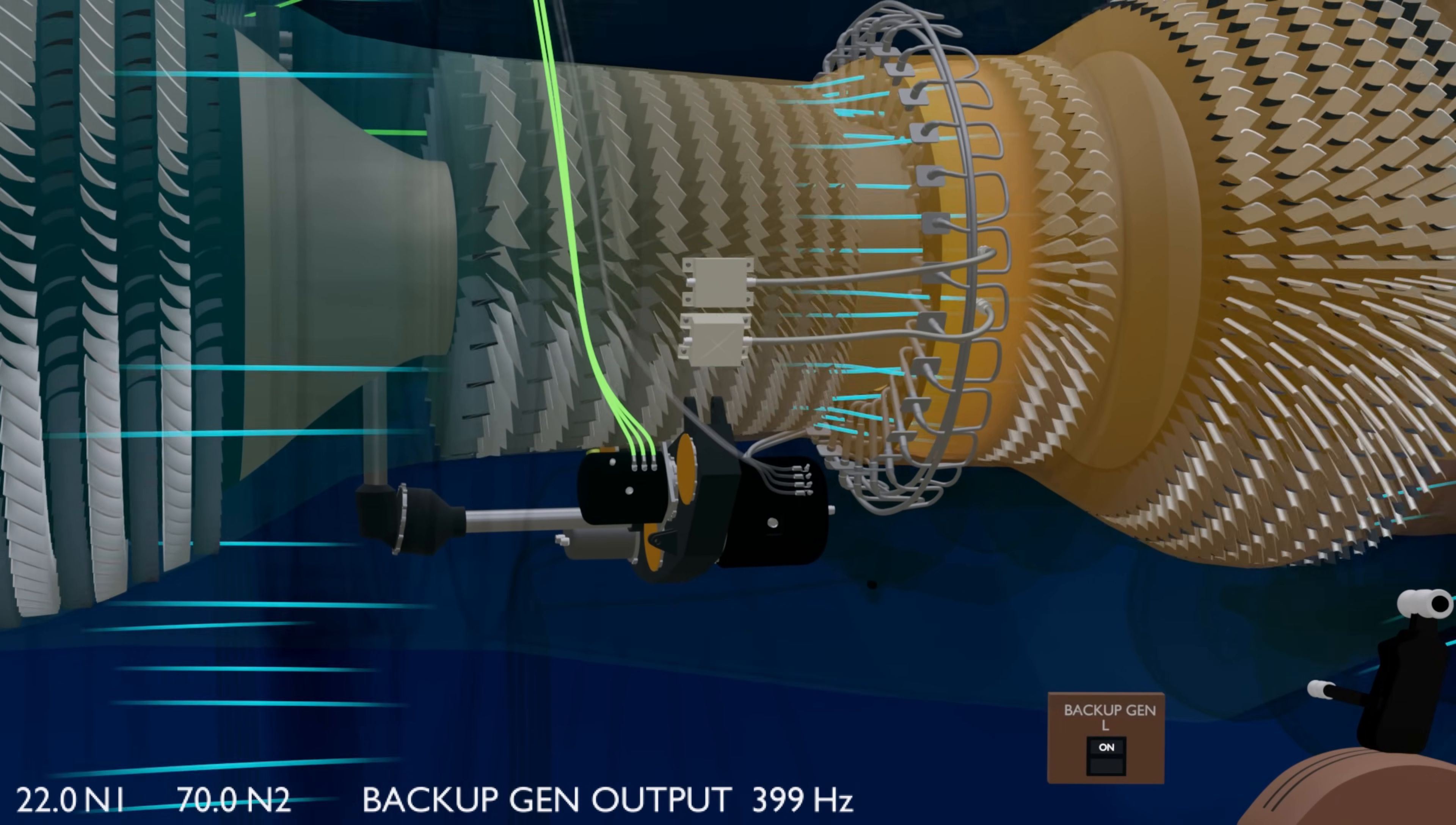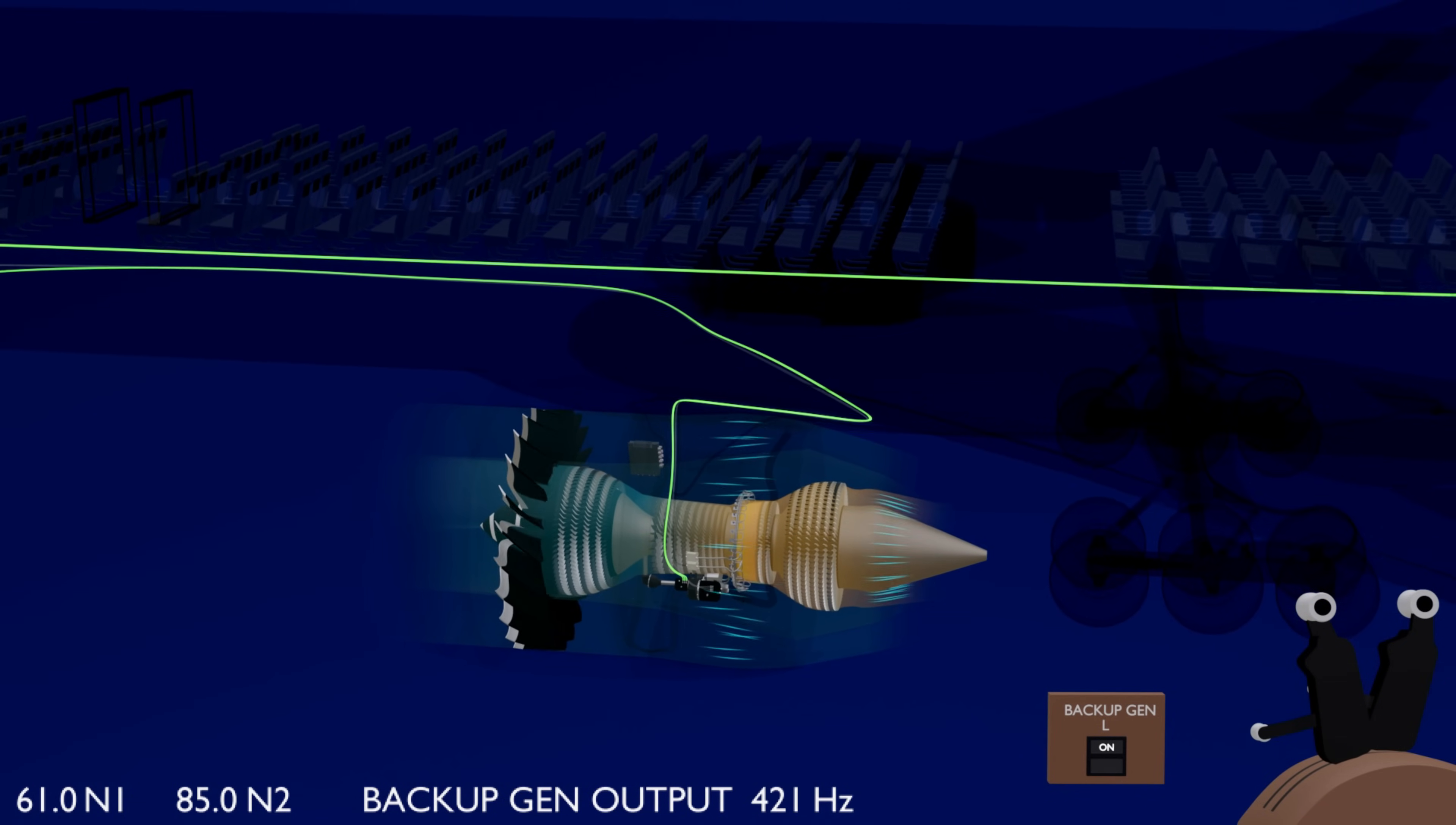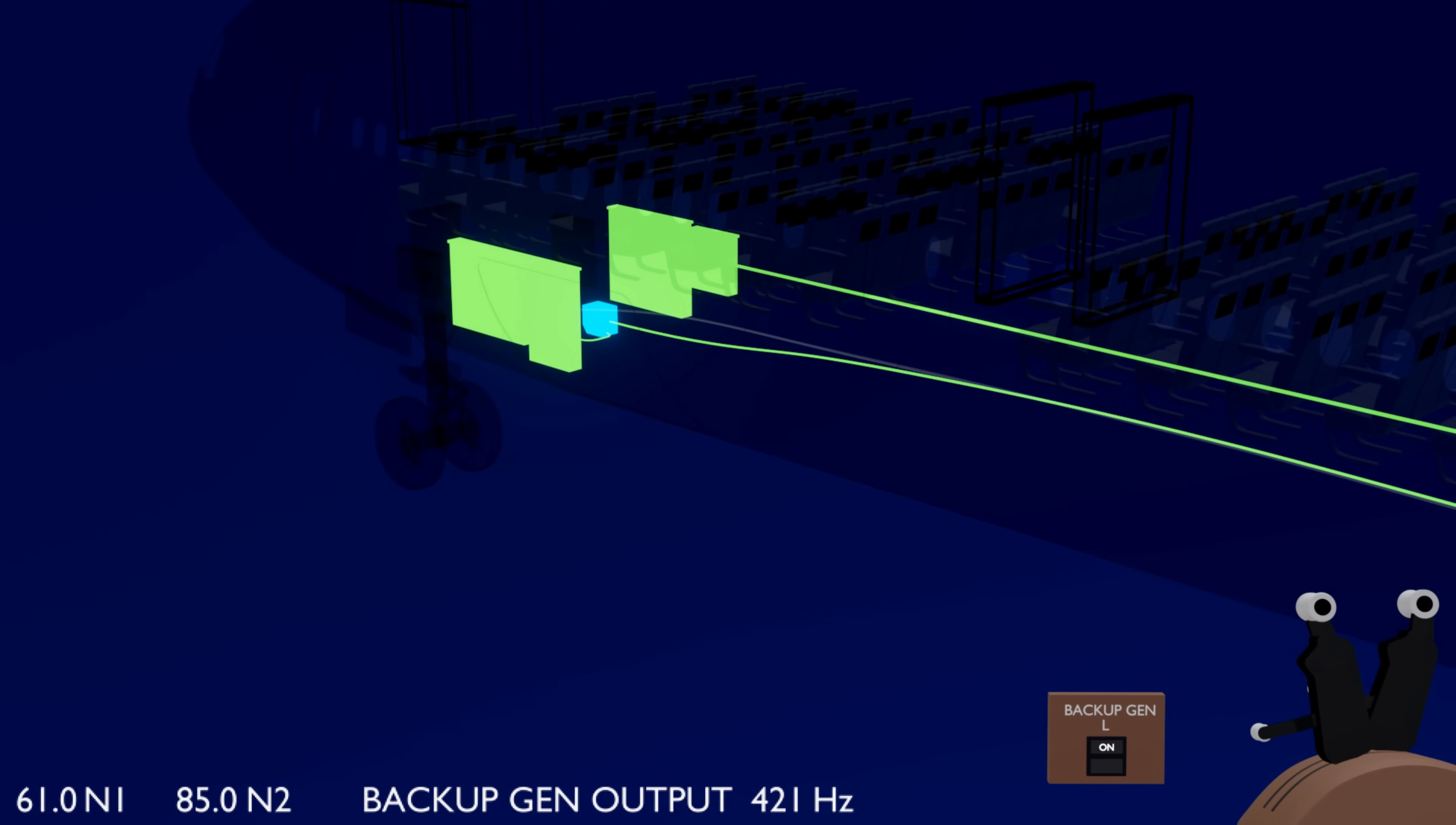The backup generator does not have a constant speed drive, therefore its output frequency varies with N2 RPM and cannot be fed directly to the electrical components. The output is first sent to a converter which changes the variable frequency to a constant 415 Hz and supplies it only to the essential loads of the aircraft.